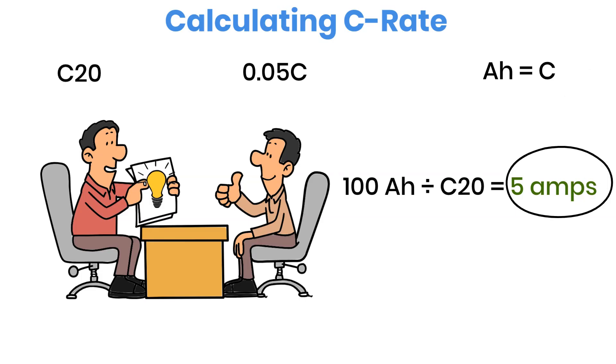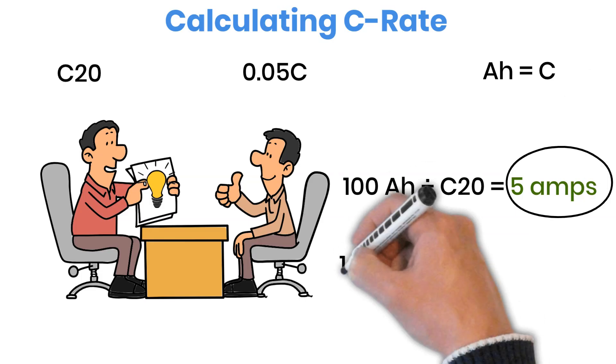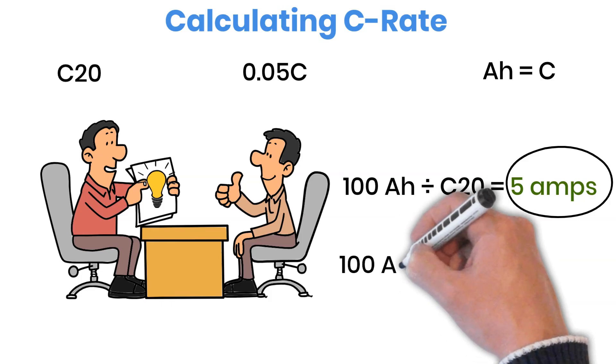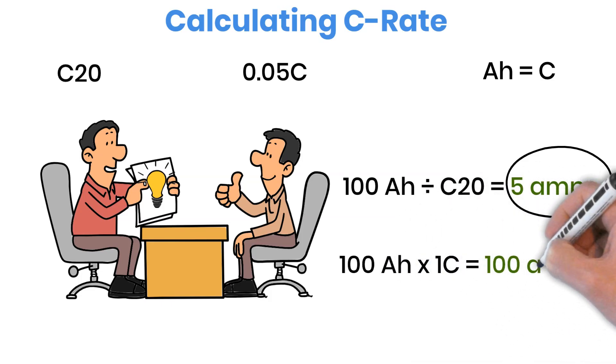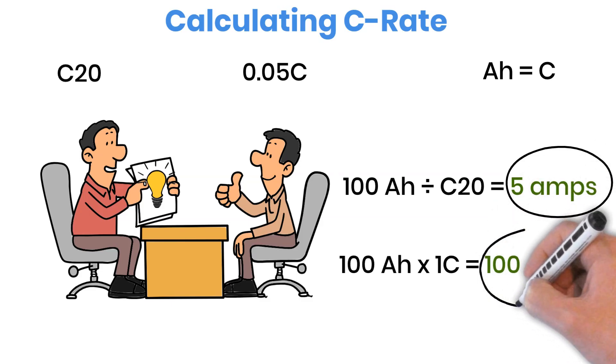Now let's look at a lithium battery example. If a lithium battery is discharged at 1C, you multiply the battery's capacity by 1, so a 100 ampere-hour lithium battery can safely deliver 100 amps of current for that 1C discharge rate.